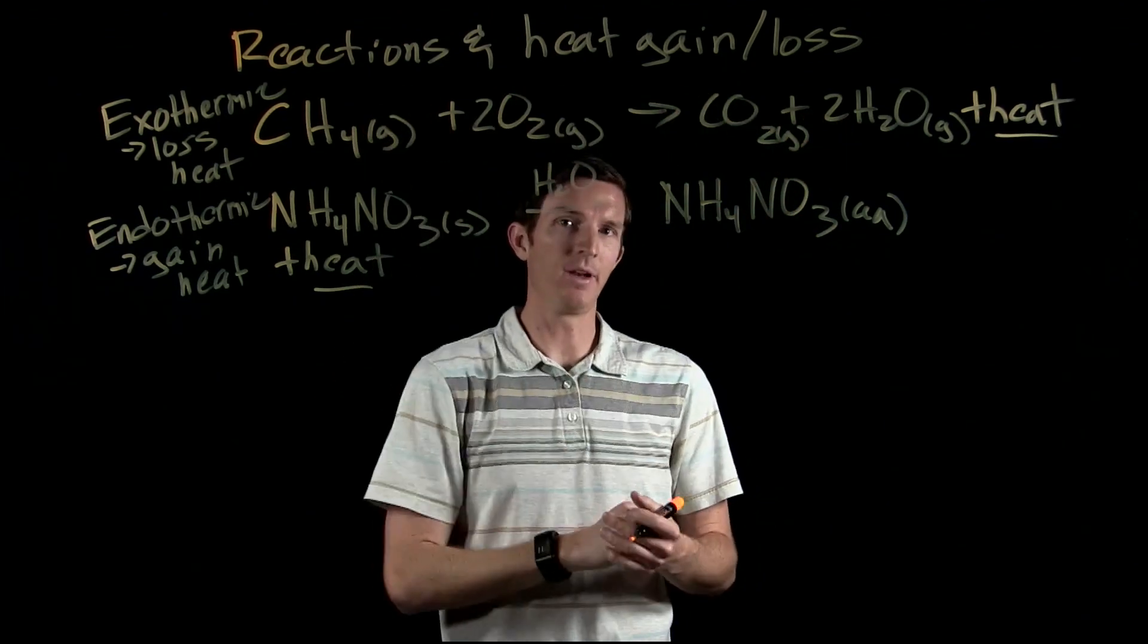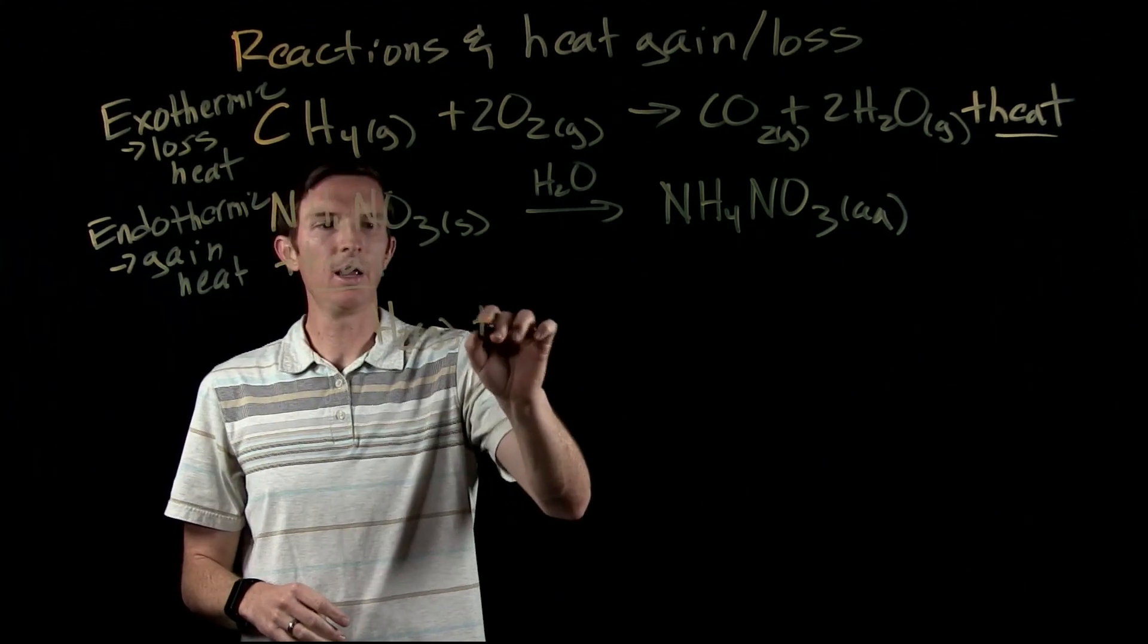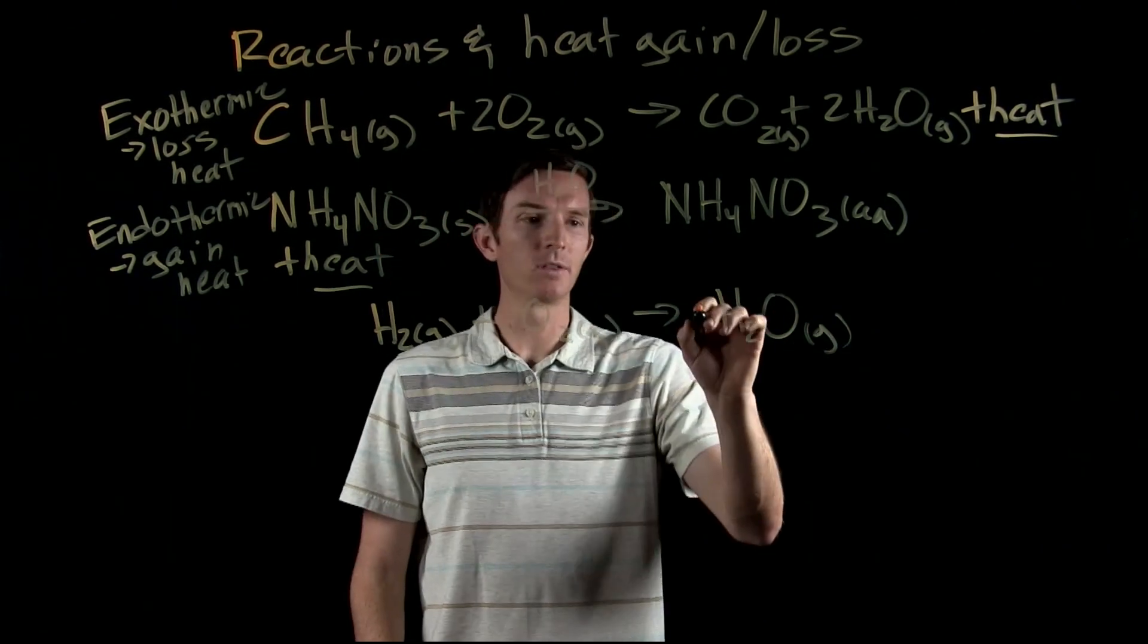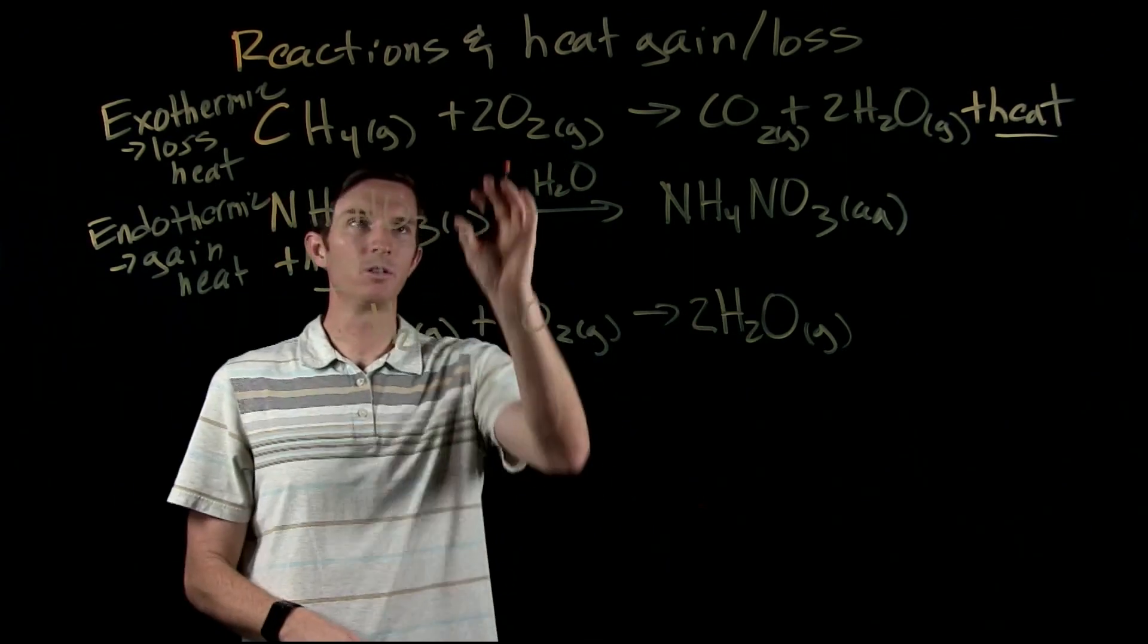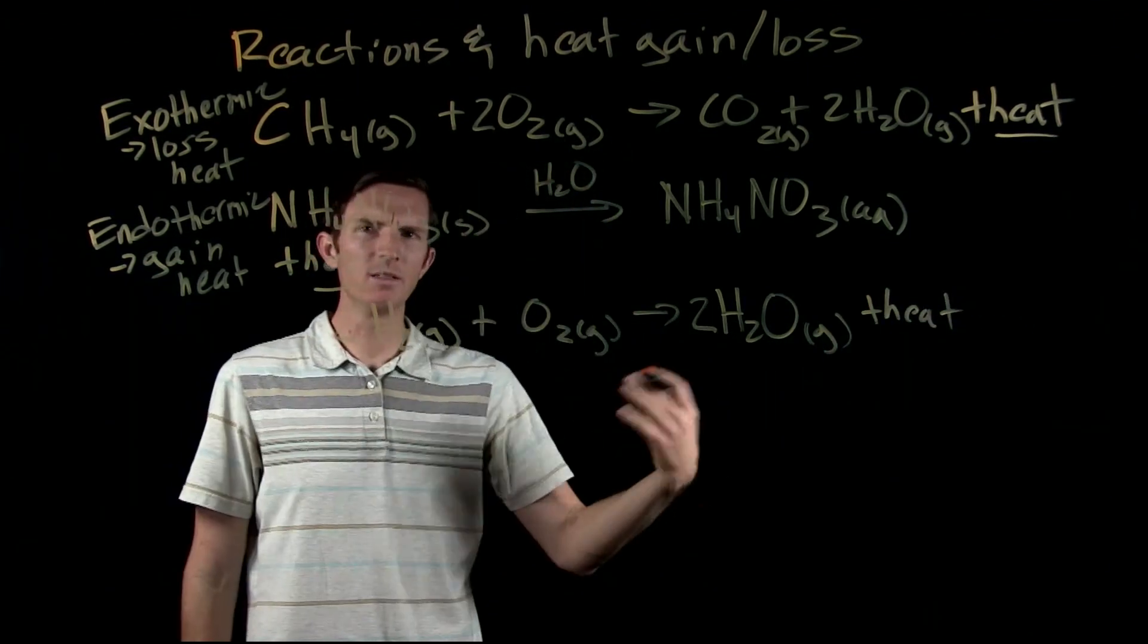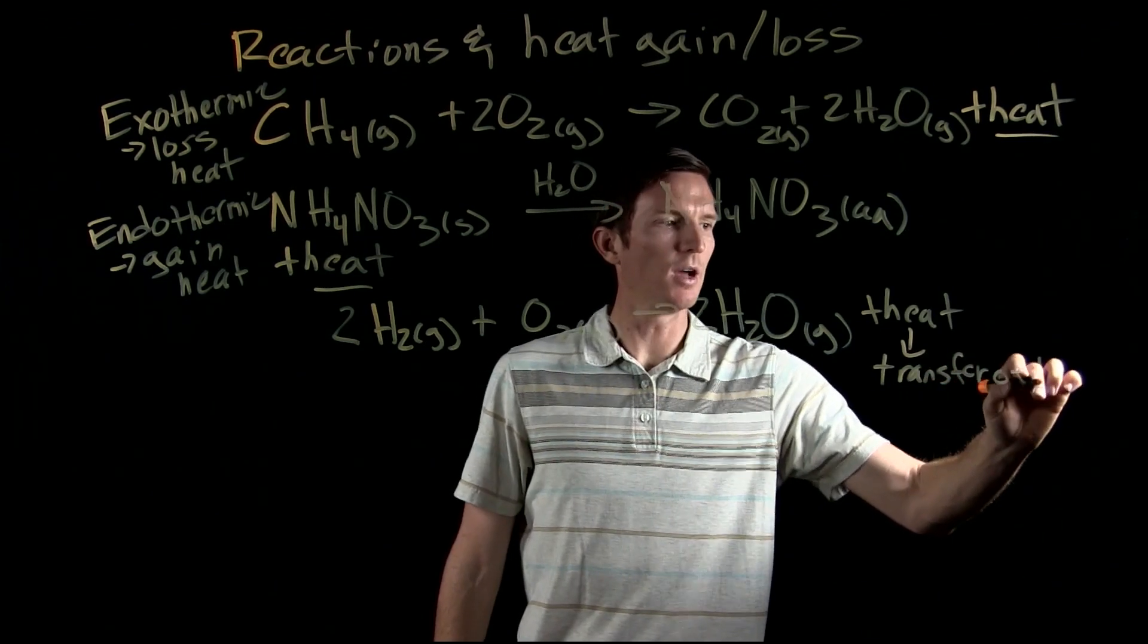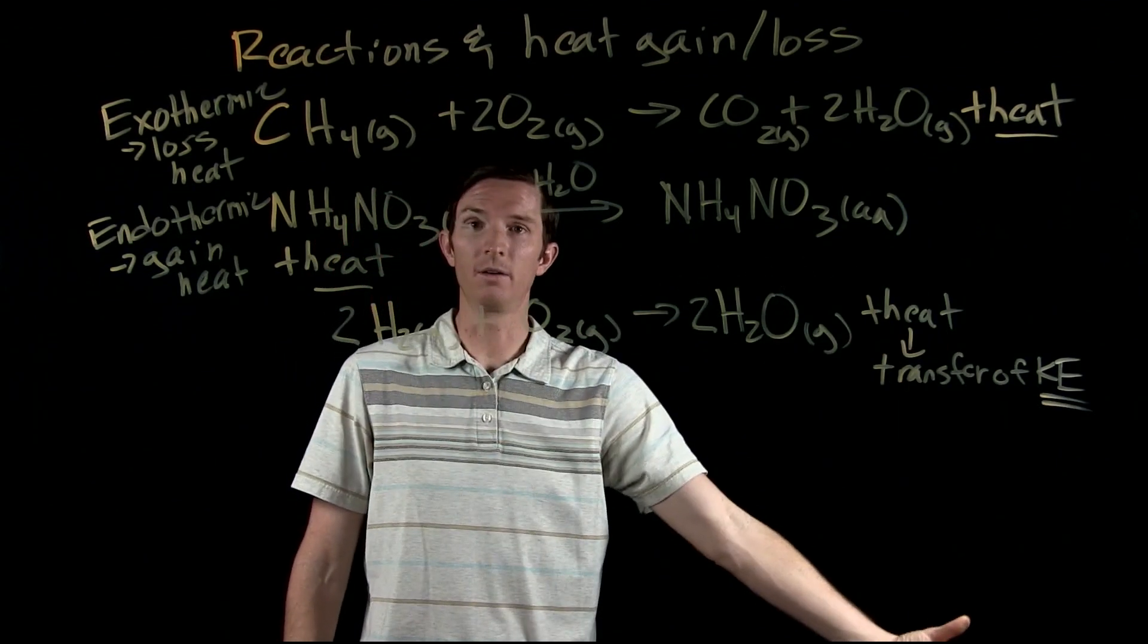We're going to use an exothermic reaction as an example. Let's say we have hydrogen and we're going to react it with oxygen. They're going to react together and give us water. When we let this reaction happen, similar to the methane reaction, we are going to produce heat. So we need to think: where is this energy coming from? And we've got to remember, what is heat? Heat is transfer of kinetic energy.